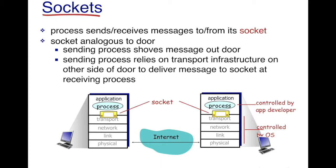At the receiving end, the transport layer, when it receives transport layer segments, has to assimilate them together and push them through this door or the socket such that the application layer process can actually receive it.